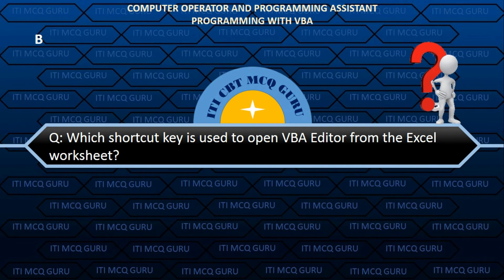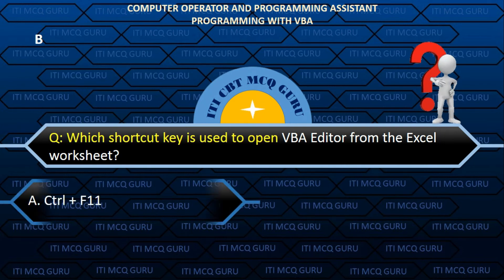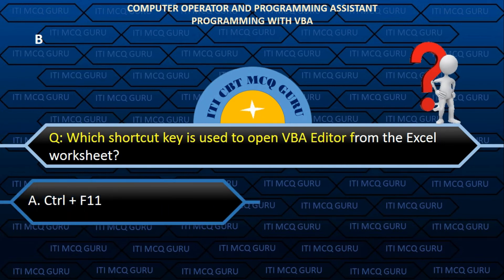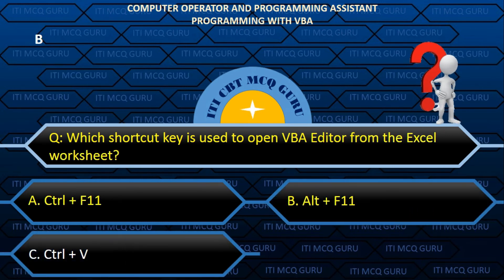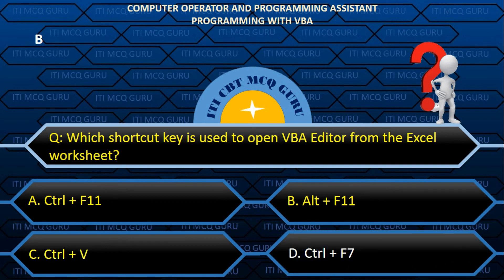Which shortcut key is used to open the VBA editor from the Excel worksheet? Answer: B. Alt+F11.